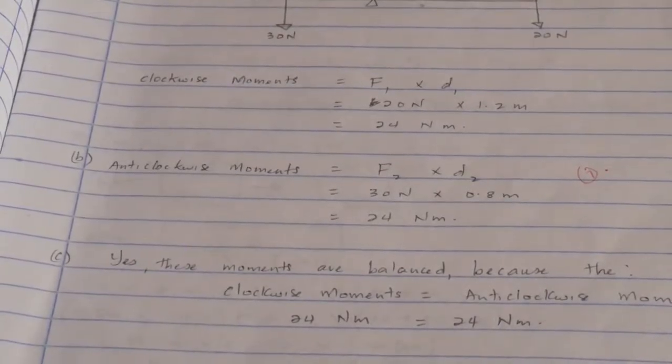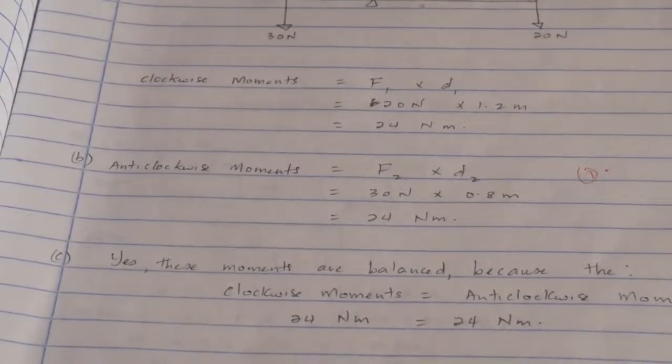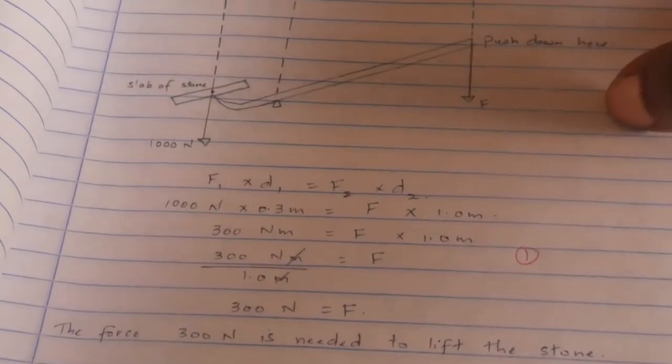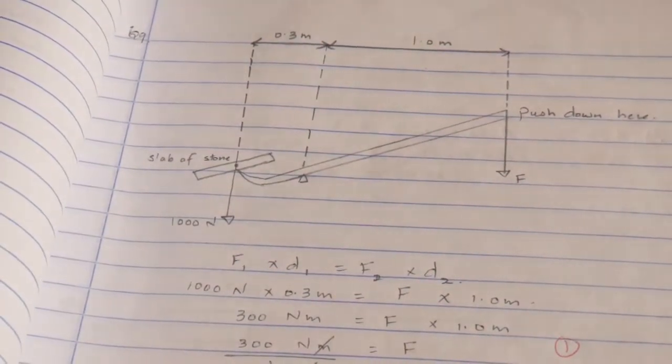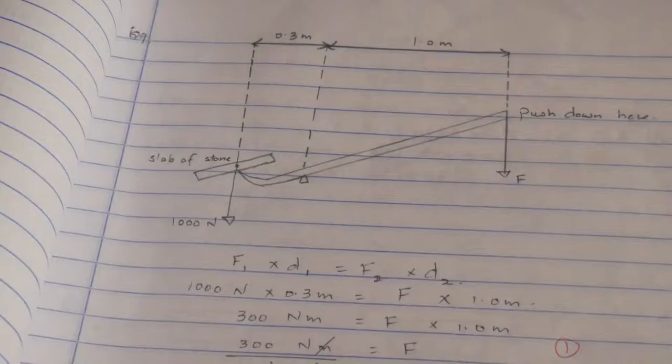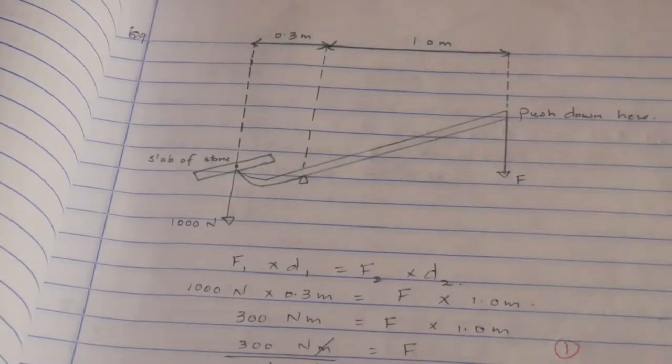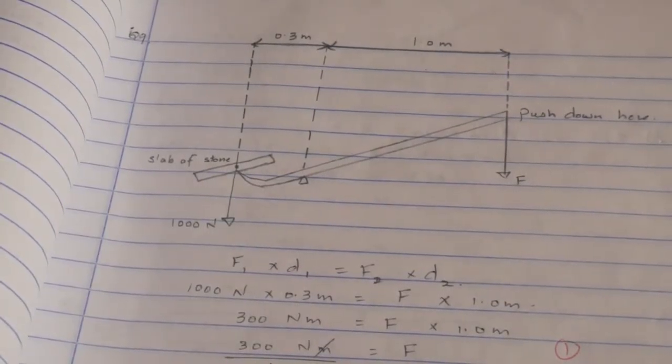And C part asks, are these forces balanced or will the beam begin to turn? Because clockwise moment equals anti-clockwise moment, the system is balanced. All right, number nine. The diagram shows how a heavy slab of stone can be raised using a lever. Calculate the force x needed to lift the stone. So we have our diagram there. The force x needed to lift the stone is, think of it as the amount of work that's done against gravity when lifting an object.